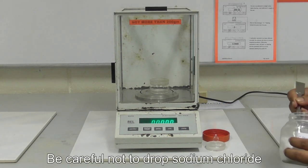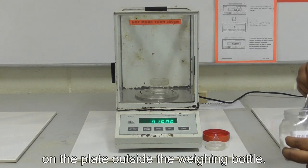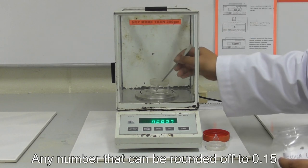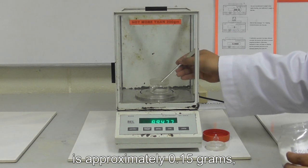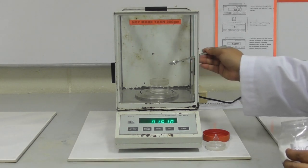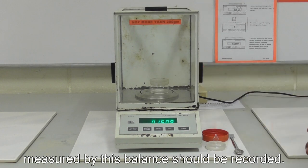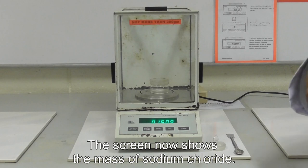Be careful not to drop sodium chloride on the plate outside the weighing bottle. Any number that can be rounded off to 0.15 is approximately 0.15 grams, but the accurate mass measured by this balance should be recorded. The screen now shows the mass of sodium chloride.